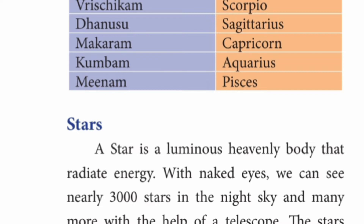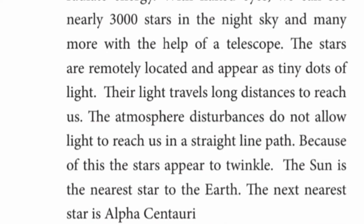A star is a luminous heavenly body that radiates energy. With naked eyes, we can see nearly 3000 stars in the night sky, and many more with the help of a telescope. The stars are remotely located and appear as tiny dots of light. The atmospheric disturbance does not allow light to reach us in a straight line path. Because of this, stars appear to twinkle.